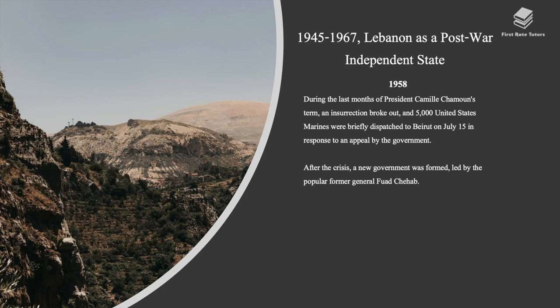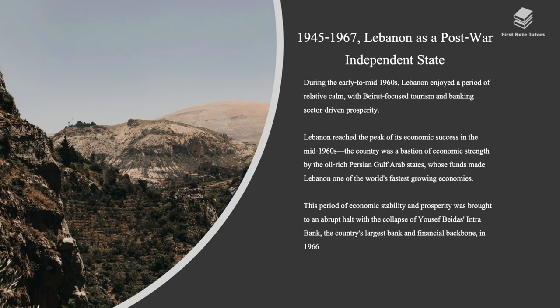The influx of migrants into Lebanon further complicated its religious divides. In 1958, during the last months of President Kamil Shamoun's term, an insurrection broke out and 5,000 United States Marines were briefly dispatched to Beirut on July 15th in response to an appeal by the government. After the crisis, a new government was formed led by the popular former general Fuad Shehab. During the early to mid-1960s, Lebanon enjoyed a period of relative calm, with Beirut's tourism and banking sector driving prosperity.